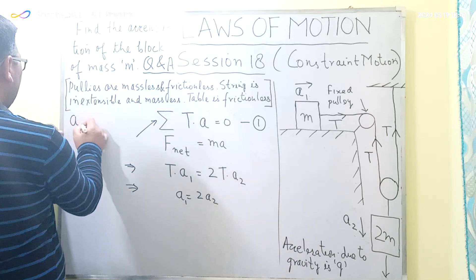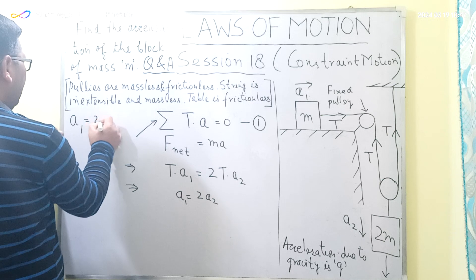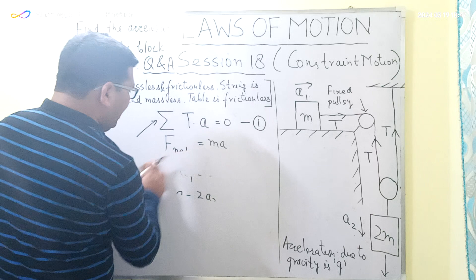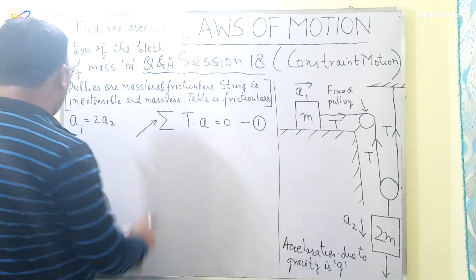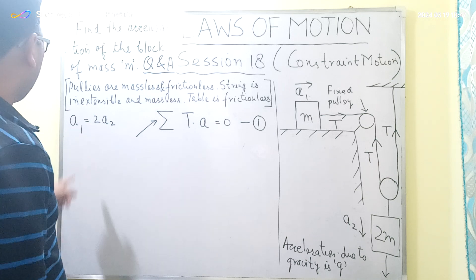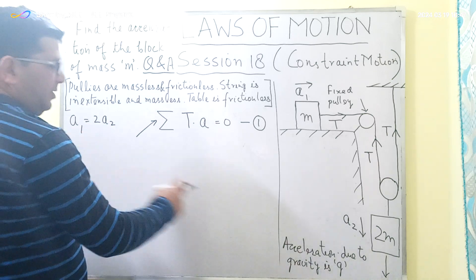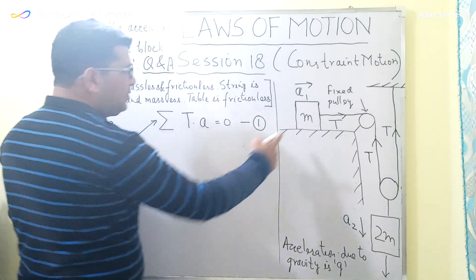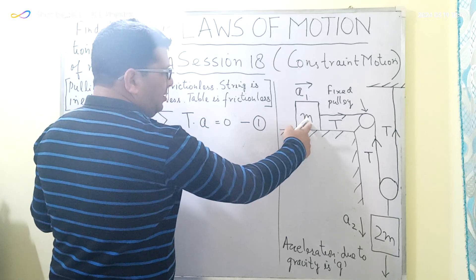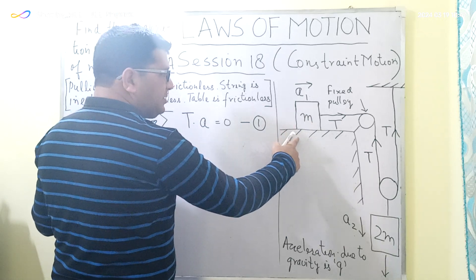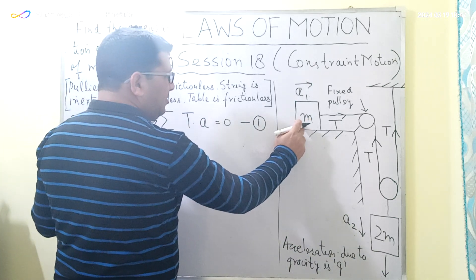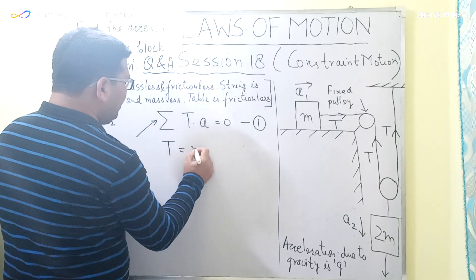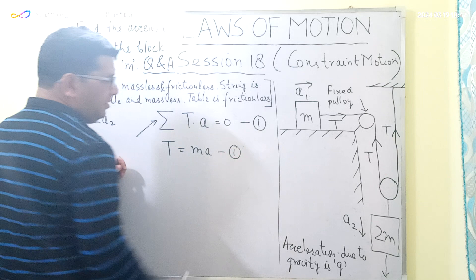So the relation is A1 = 2 × A2, meaning the acceleration of block M is twice the acceleration of block 2M. Since the table is frictionless, the only force acting on block M is the tension in the string, giving the equation T = M × A1.